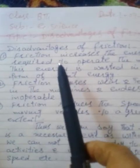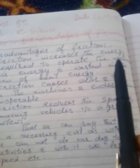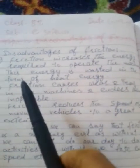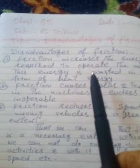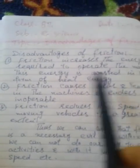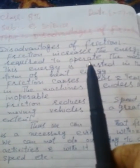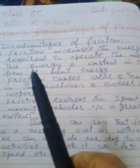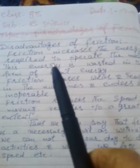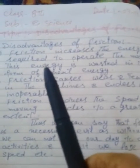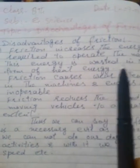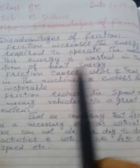Number one: friction increases the energy required to operate the machines. This energy is wasted in the form of heat energy. Friction saithi chh machine chalaan — friction causes the machine to require more energy, and that energy is wasted in the form of heat energy.